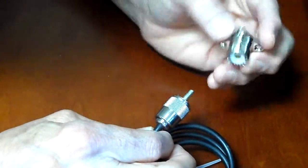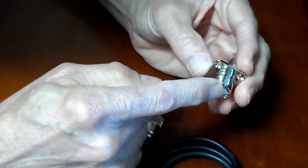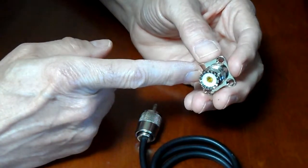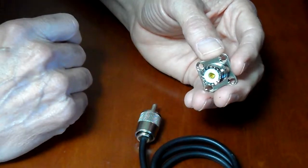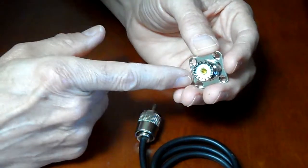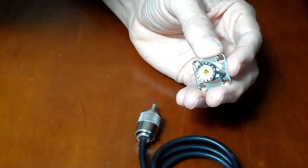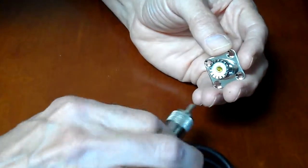Now first, what you want to do is take your, this connector, by the way, is the SO239, which you'll find on the back of your radio, ham radio or CB.